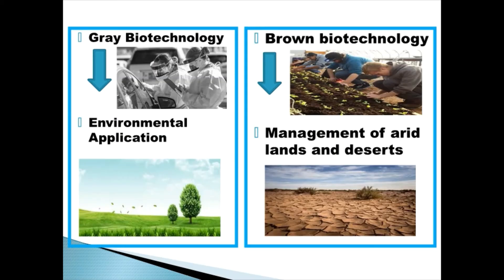Another branch of Biotechnology is Gray Biotechnology which is dedicated to environmental applications and focused on the maintenance of biodiversity and the removal of pollutants. Then comes Brown Biotechnology which is related to management of arid lands and deserts.